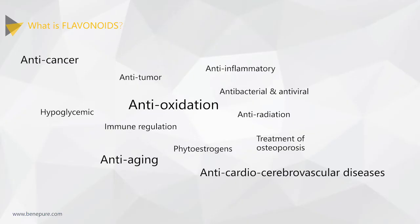Flavonoids have anti-cancer, anti-tumor, anti-cardiocerebrovascular disease, anti-inflammatory and analgesic, immune regulation, hypoglycemic, treatment of osteoporosis, antibacterial and antiviral, anti-oxidation, anti-aging, anti-irradiation and other effects. In addition, flavonoids also have some effect as phytoestrogens. In animal husbandry, the application of flavonoids can significantly improve animal production performance, improve animal body resistance to disease and improve animal immune function.